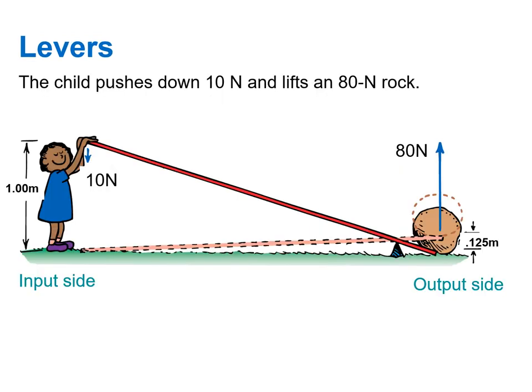Here's an example of a lever being used by a child. The child is pushing down with a 10 Newton input force and she is lifting an 80 Newton rock. So that's our output force. But the child has to push one meter downwards in order to lift the rock one eighth of a meter or about 0.125 meters upwards.